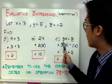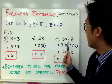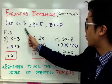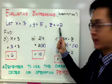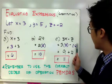And for letter C, I have 3x minus z. By evaluating or substitution method, I'm going to replace x by 3 and z by negative 2. So I have 3 times 3 minus negative 2.